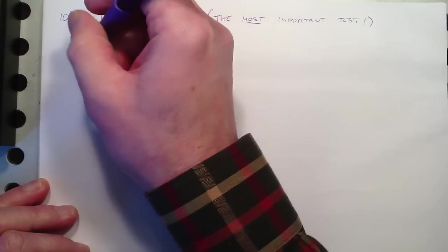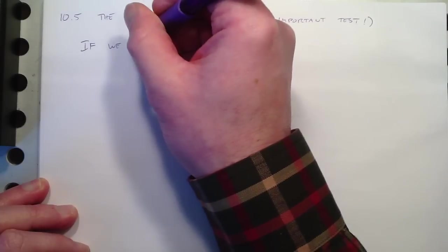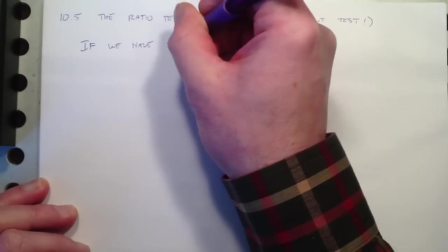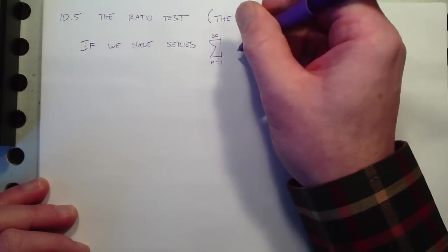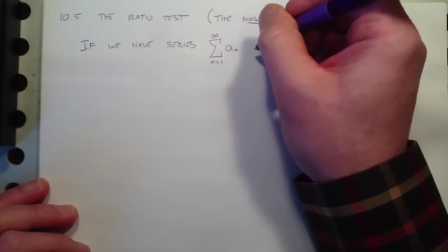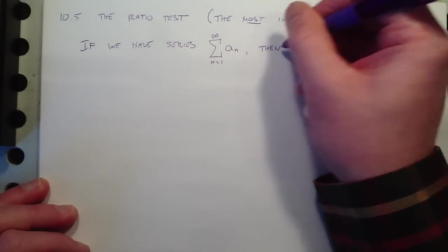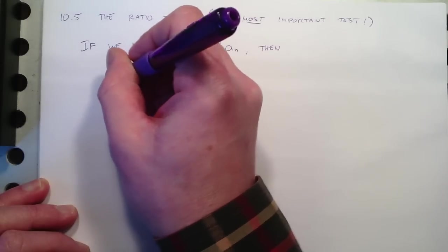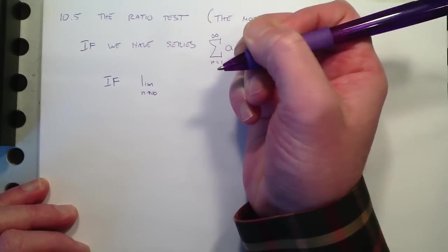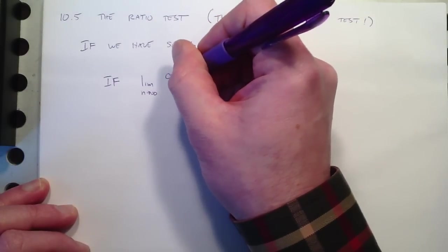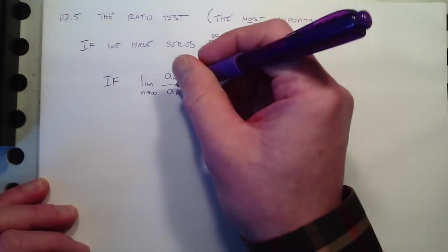The ratio test says that if we have a series, and again, I'm going to start it with 1, but it doesn't have to start at 1. It'll start anywhere. If the limit as n approaches infinity of the n plus 1 term over the n term, in other words, the next term in the series divided by the term before it.